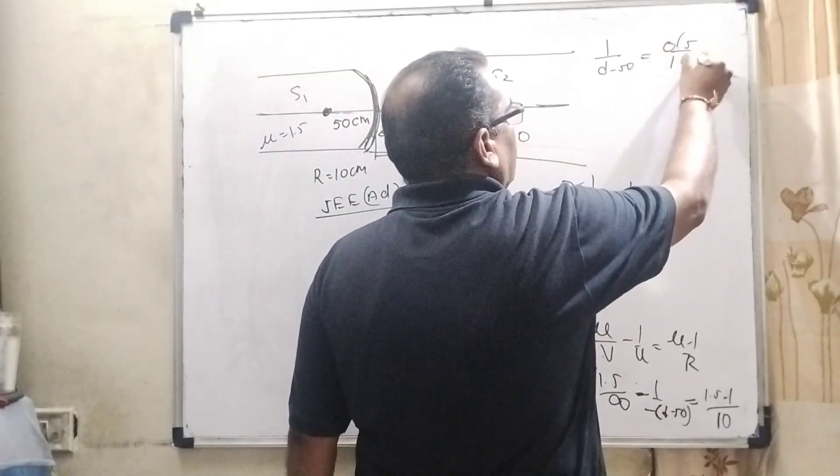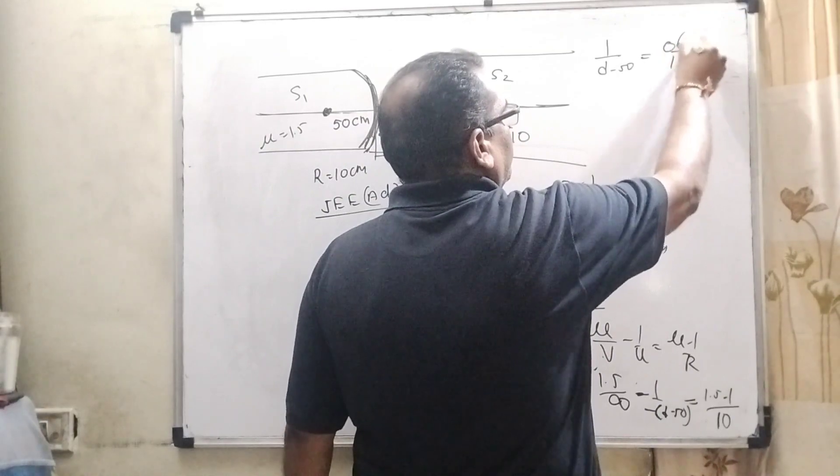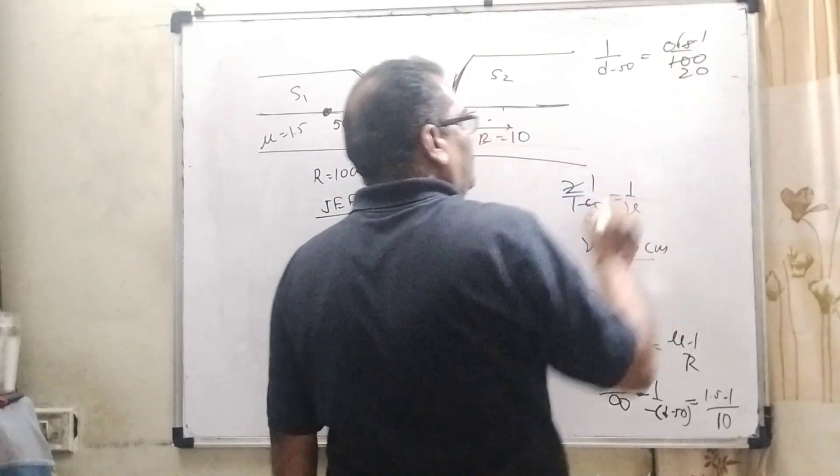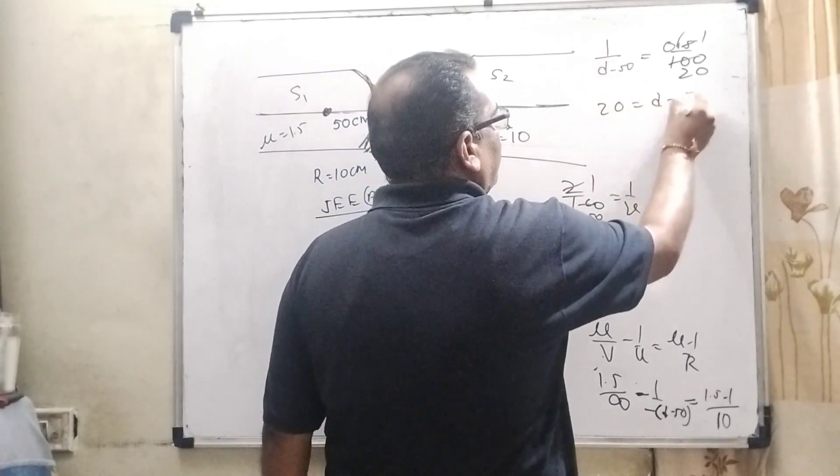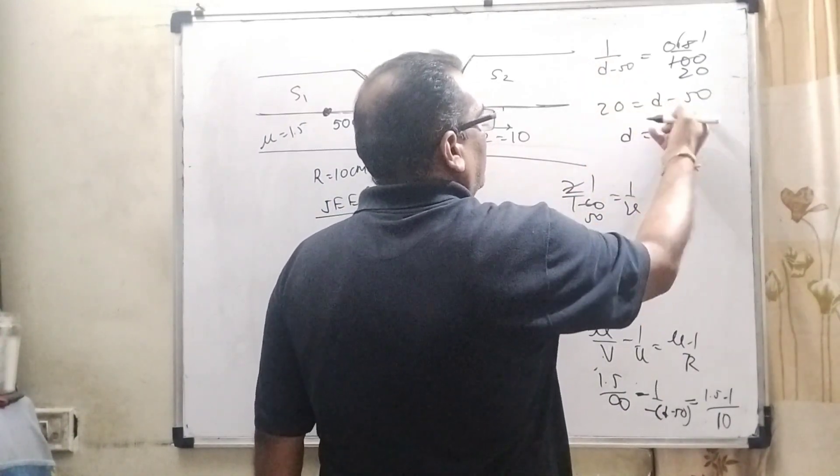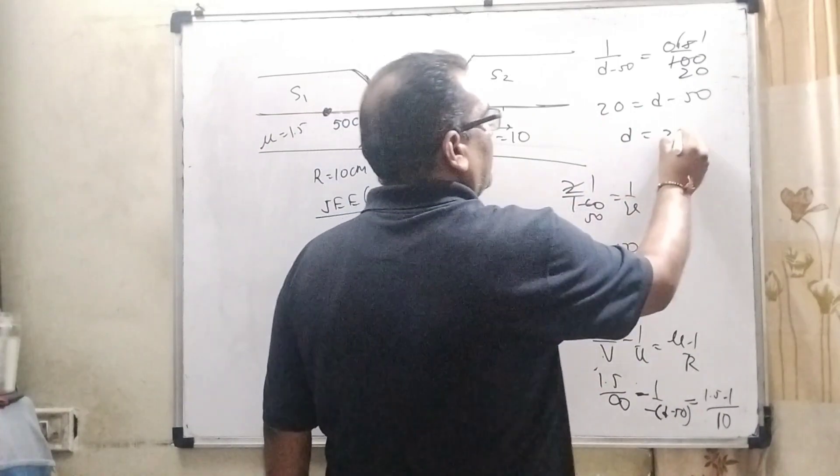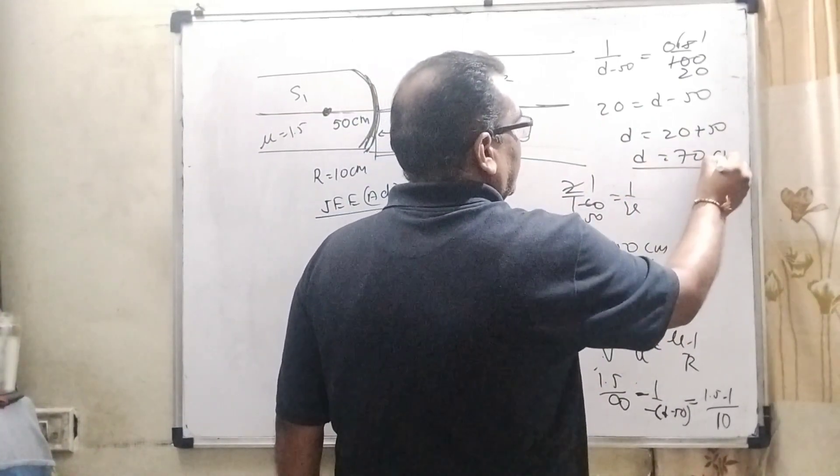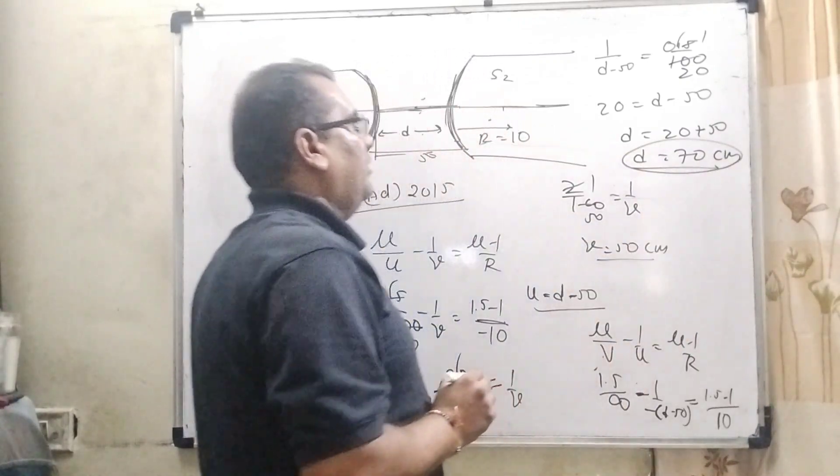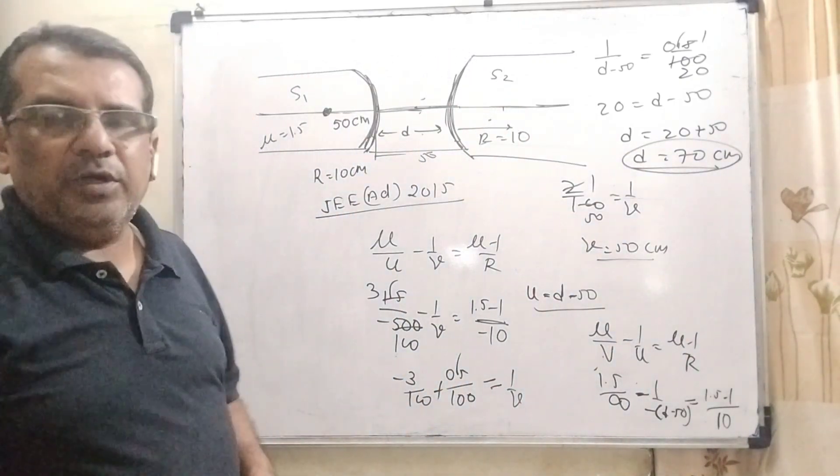So, here 20 equal to 0.5 upon 10. So, here 20 equal to D minus 50. Then D equal to - minus 50 transposing - then 20 plus 50. Then it becomes 70 centimeter. So, here our D is 70 centimeter.